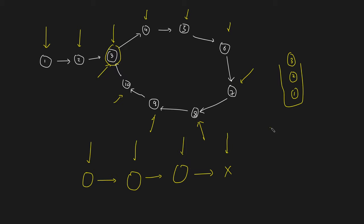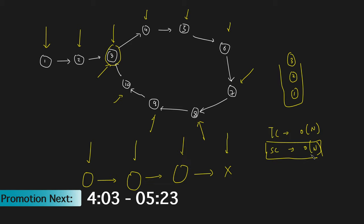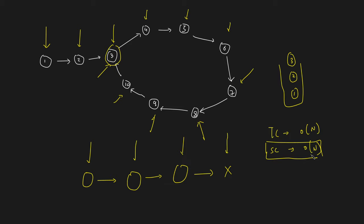The time complexity of this brute force method is O(n) for the complete traversal, and the space complexity is O(n) for hashing all the nodes. The interviewer will not be happy with the extra space and will ask you to optimize it, so in the next step we'll optimize this algorithm.